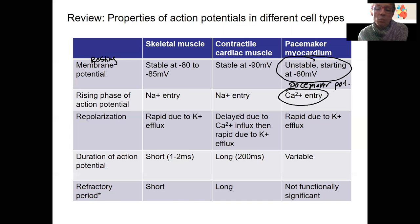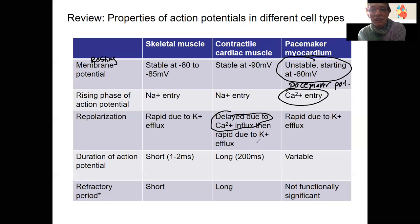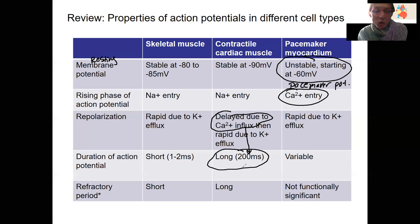Potassium leaves the cell when those channels are open, but there's a delay in the contractile cardiac muscle due to that calcium influx that counteracts the efflux and results in that prolonged action potential. So that is actually the cause of this long action potential in contractile cardiac muscle, which is the key piece for this row.